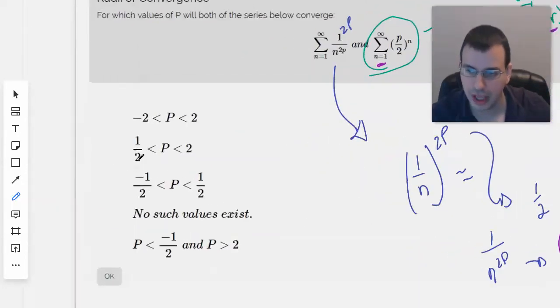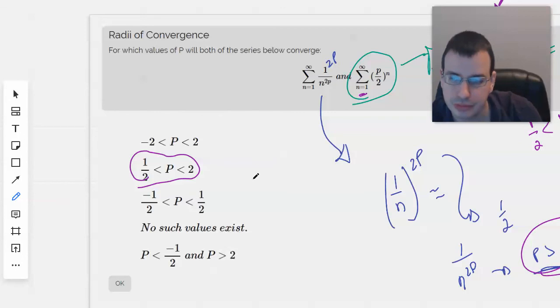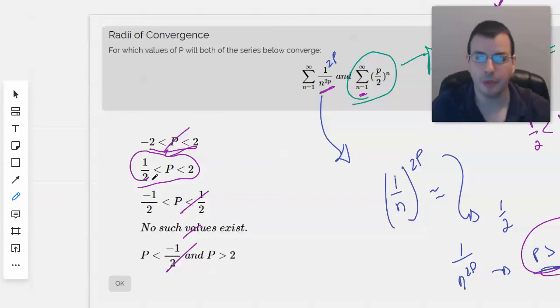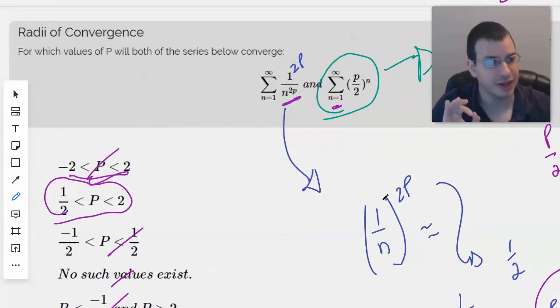And so we have this guy right there. We know this one won't work because if P is less than 1 half, this won't converge. So that's no. P can be greater than 1 half, so this one doesn't work. We found values that exist. And this is saying that, nope, that's just wrong. So it's 1 half. 1 half is less than P, less than 2. And they're specifically less than and greater than and not equal to.